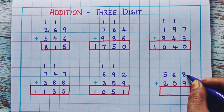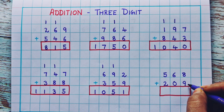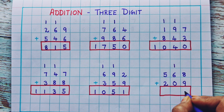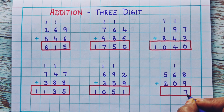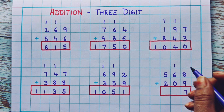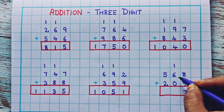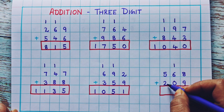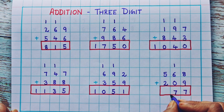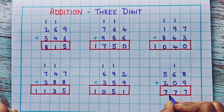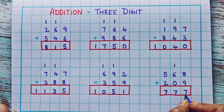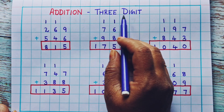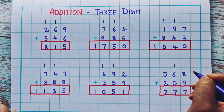Now let's see the next one: 568 plus 209. Let's do the addition of the ones place — 8 plus 9 is 17, so here I'll write 1 and 7. Now 1 plus 6 is 7, so I'll write 7. Then 5 plus 2 is 7. So the answer is 777. I hope the addition of three-digit numbers with carryover is clear to you.